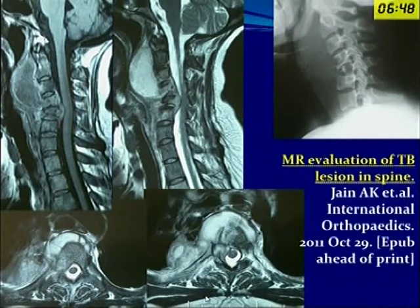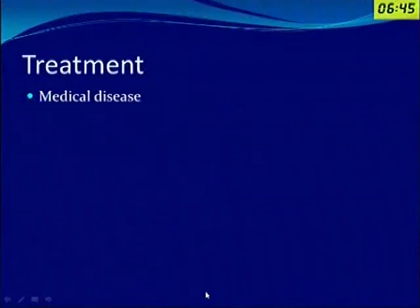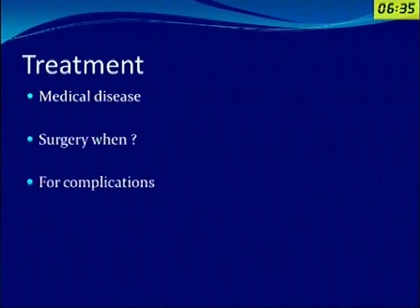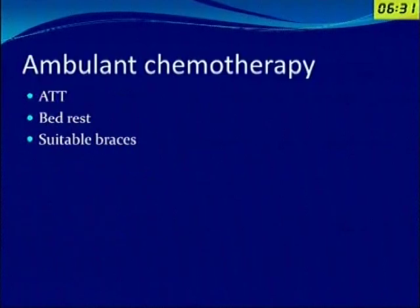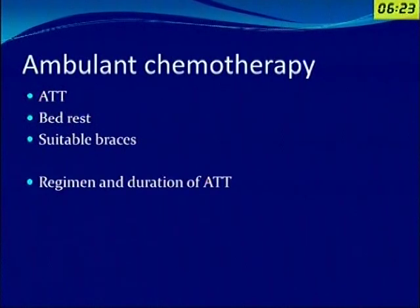Coming to treatment: first of all, TB is a medical disease, whether it is pulmonary tuberculosis, osteoarticular, or spinal tuberculosis. We only operate for complications, either neural complications or deformity. Hence, ambulant chemotherapy — ATT, bed rest, and suitable braces — is the treatment to be offered. Regarding regimen and duration, these are the two most discussed issues.